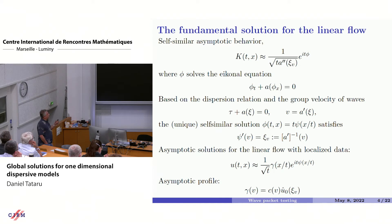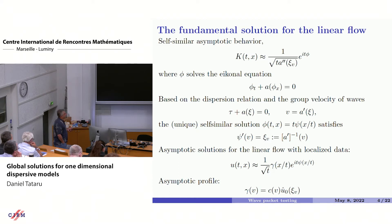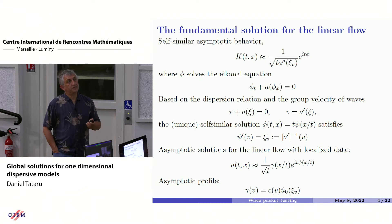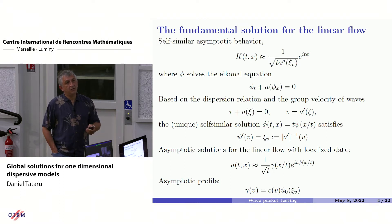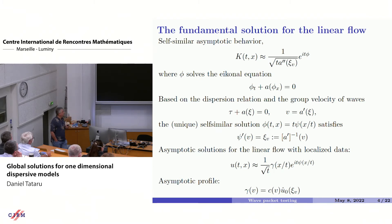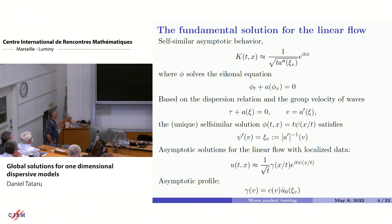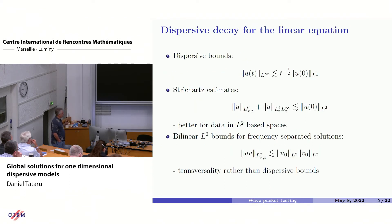So psi is the Legendre transform of a and a is the Legendre transform of psi. This is the fundamental solution. If you look at solutions for the linear equation with nice localized initial data, it will look very much like this fundamental solution, except that instead of having this precise amplitude at leading order you're going to have some amplitude — I called it gamma — which depends at leading order on x over t. So it's constant on rays starting from the origin, and this gamma, which we can think of as some asymptotic profile, is closely related to the Fourier transform of the initial data.